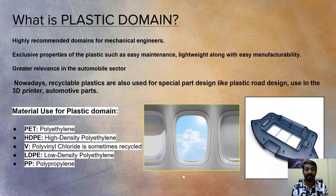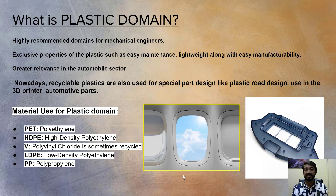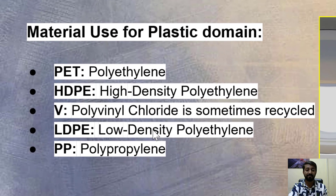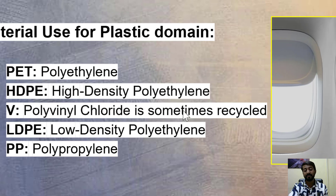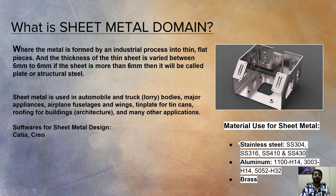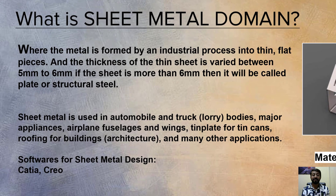The next domain is plastics. The plastic domain is highly recommended for mechanical engineers because of the wonderful properties of plastics such as easy maintenance, lightweight, and easy manufacturability. It has greater relevance in the automobile sector. Nowadays, special parts are manufactured using recycled plastic, like road designs, 3D printer components, and automotive parts. You can see examples like aircraft windows and automobile parts made from plastic.